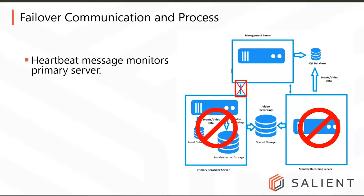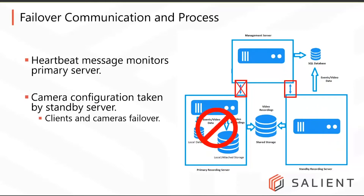If the primary recording server goes down, the heartbeat message gets an X — meaning the primary did not respond. The management server then initiates the failover process. The standby recording server is brought online; the management server sends it a message to wake up and transmit the configuration of the primary recording server. The standby now knows which cameras to begin recording from. Additionally, desktop client applications are redirected from the primary to the standby recording server so that live video viewing is uninterrupted.